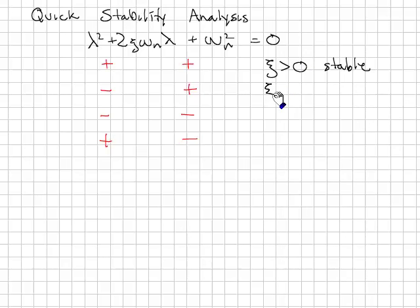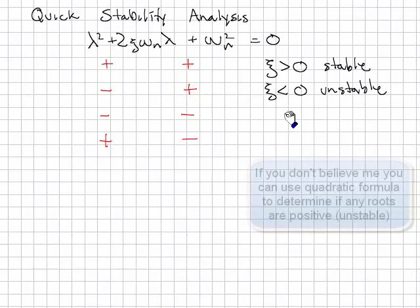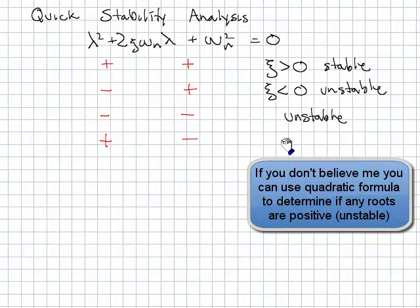Here, you can see that zeta must be less than zero, so the system is unstable. You can also see zeta is less than zero, so we have an unstable system here and unstable here.